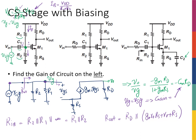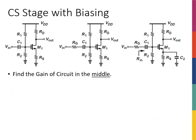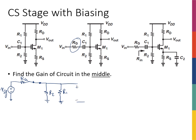Now let's move on to the next circuit — the one in the middle. For this circuit, the only thing that has changed is that I've added a gate resistance RG. Let's see how it changes the gain, input impedance, and output impedance. Drawing the small signal model: I have V_in, then RG, then the capacitor which is a short circuit. I have R2 to ground and R1 to ground. From that point forward, I have the gap VGS, the current source GM·VGS, RD on the drain side, and RS at the source. That's my V_out.